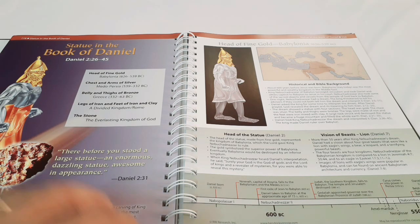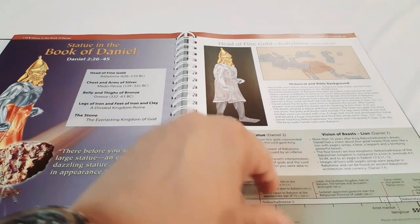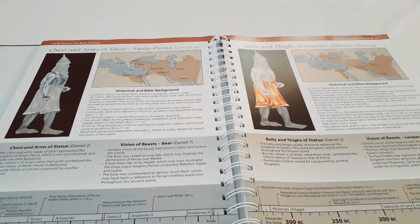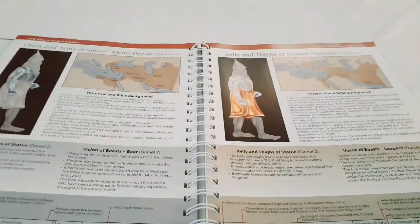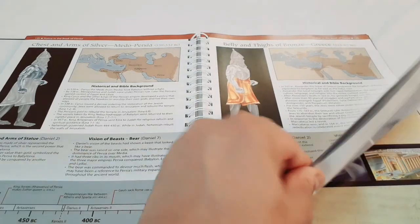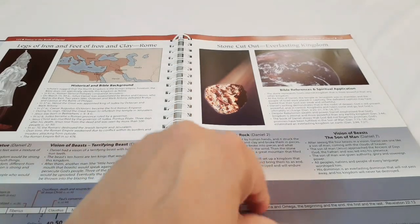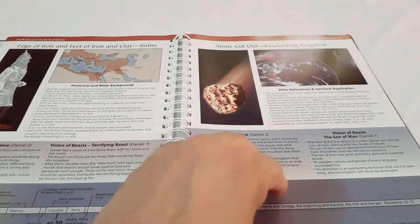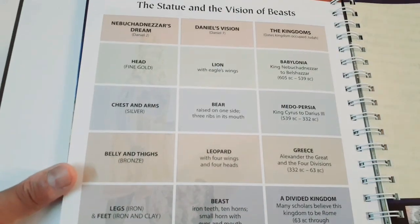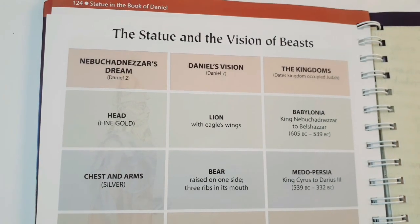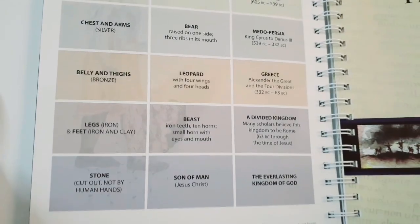Continuing the Old Testament in the Rose Book of Bible Charts Maps and Timelines, we look at the Book of Daniel. It continues into the next page where it talks about each segment of the dream of Nebuchadnezzar and Daniel's interpretation of that dream. The statue and the visions of the beast — Daniel's vision and the kingdoms — everything is listed out in this book.